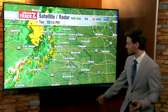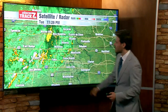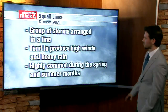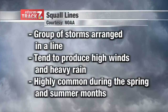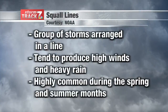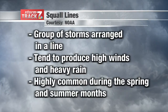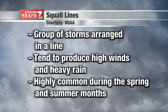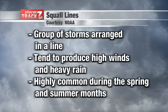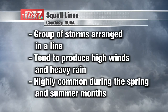So this is what's known as a squall line — it's just a line of thunderstorms. In terms of a couple definitions, it's a group of storms arranged in a line, just like you saw. They tend to produce at least some high straight-line wind damage, and they can also bring heavy rains, lightning, and thunder.